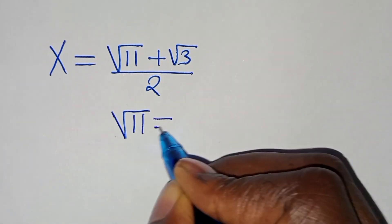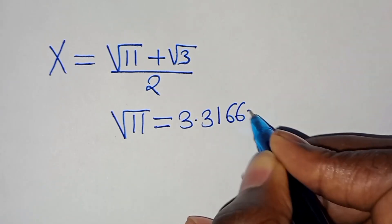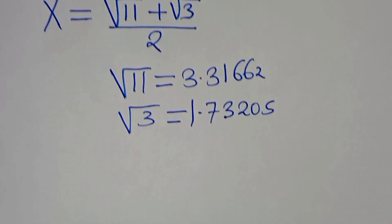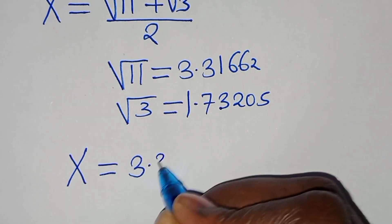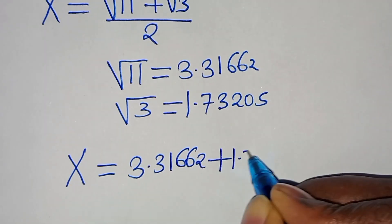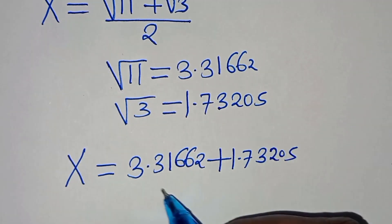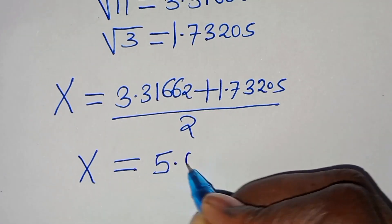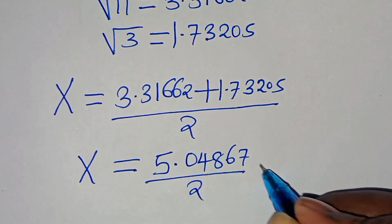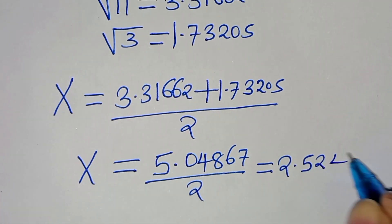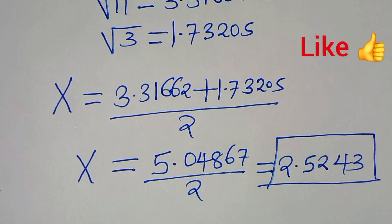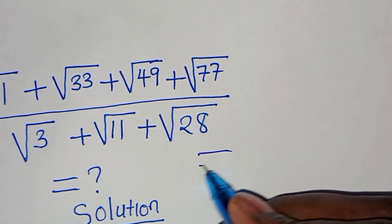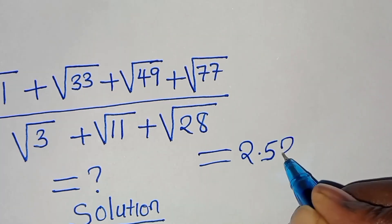Square root of 11 is approximately 3.31662 and square root of 3 is approximately 1.73205, so x equals 3.31662 plus 1.73205 divided by 2, which equals 5.04867 divided by 2, giving a value of approximately 2.524. This is the solution to this square root math problem. Please like this video and subscribe — see you in the next video, bye bye for now.